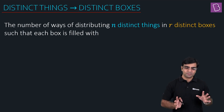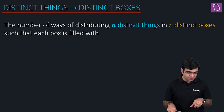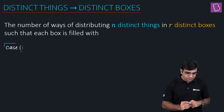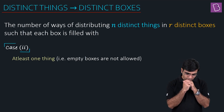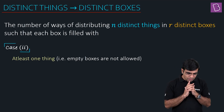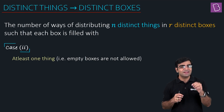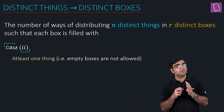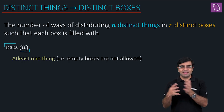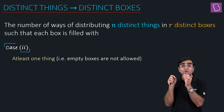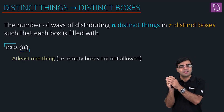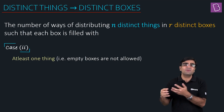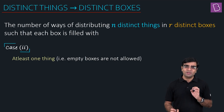Now Case 2: the number of ways of distributing n distinct objects in r distinct boxes such that each box is filled with at least one object — empty boxes are not allowed. For this, we use the Principle of Inclusion and Exclusion: take the total number of cases, then subtract the cases where at least one box is empty, using the alternating inclusion-exclusion pattern.